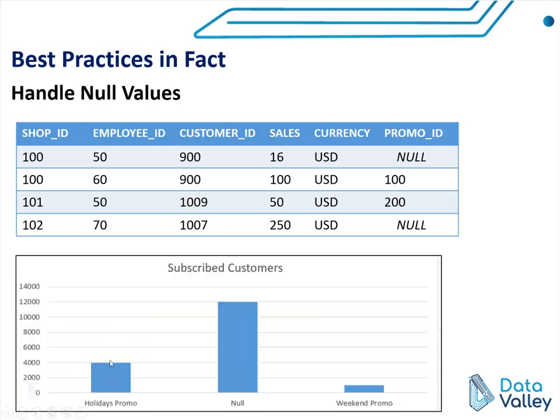In the report, we have first promo, today's promo, and weekend promo — and we can see a big percentage of revenue is coming from a null promo code.